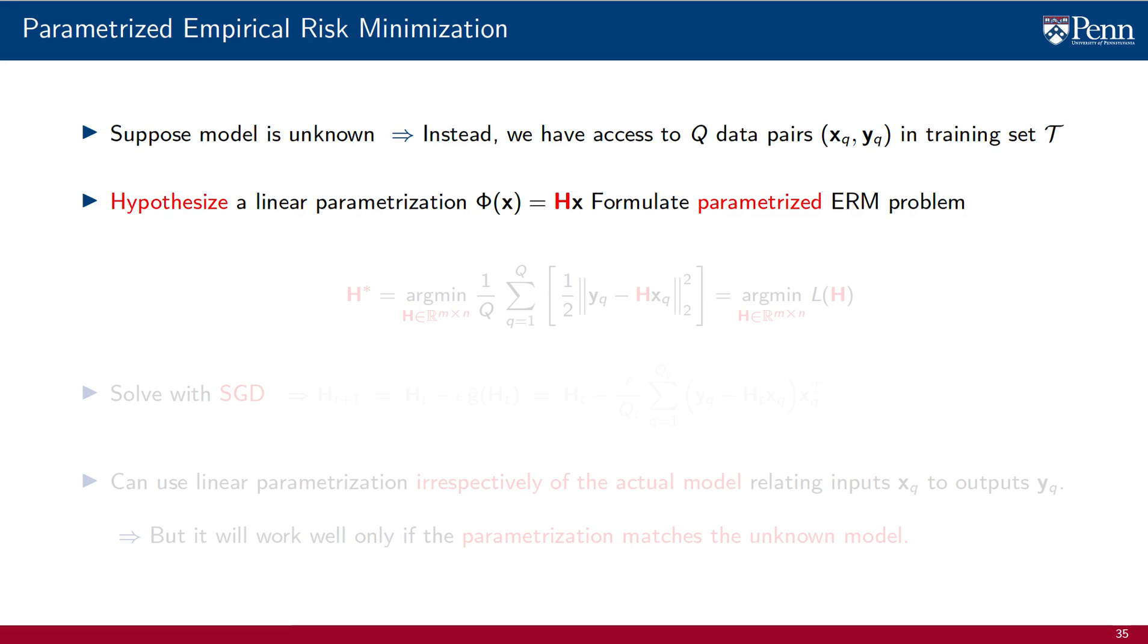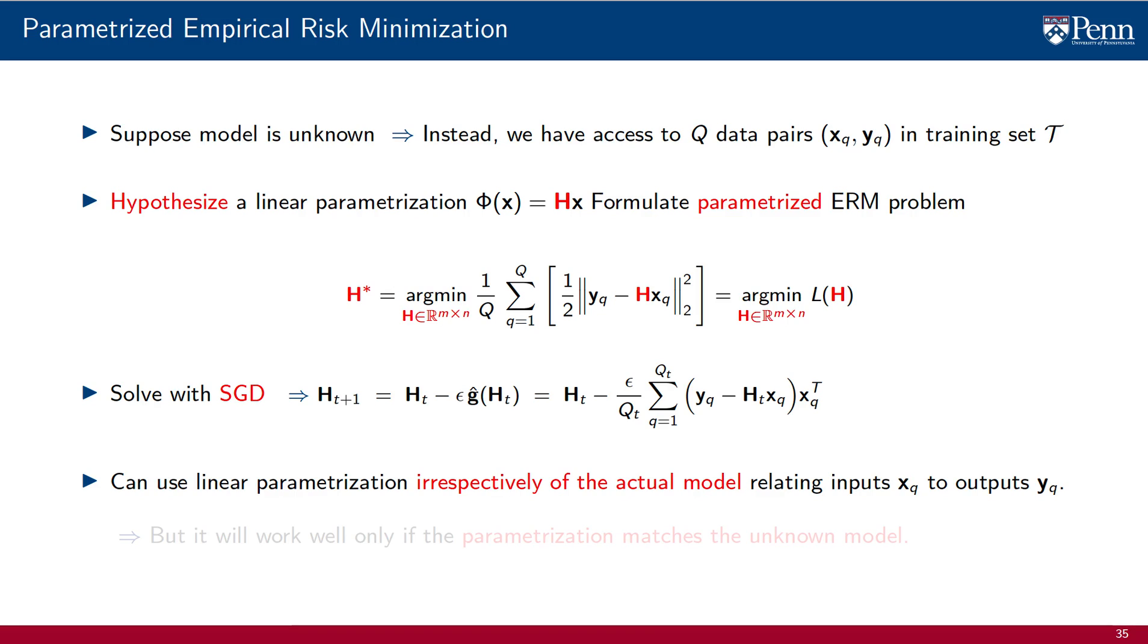Using this function class, we end up with the ERM problem in which the point-wise loss is averaged over the training set, not over the distribution, which we are assuming, as would be the case in applications, is unknown. This is a problem we can solve with stochastic gradient descent, the particular form of which we show here for reference, but this specific expression for SGD is not important for our forthcoming discussions. A more important observation is that the linear parametrization we have chosen can be used irrespectively of what the actual model is. It does not matter how inputs are related to outputs in the actual set. We are free to hypothesize a linear relationship wherever we please. But of course, this linear parametrization will work well only when it matches the unknown model. This is the most important point we have to make about ERM, the importance of matching the parametrization to the unknown model. We will therefore elaborate with three examples.